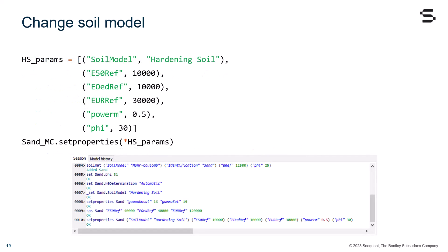In this slide, you can see the full Python code for such a case. We first define a new variable called hs_params, which contains a list of tuples with the new properties we need in order to define a hardening soil model. All we need afterwards is to run the setProperties command,